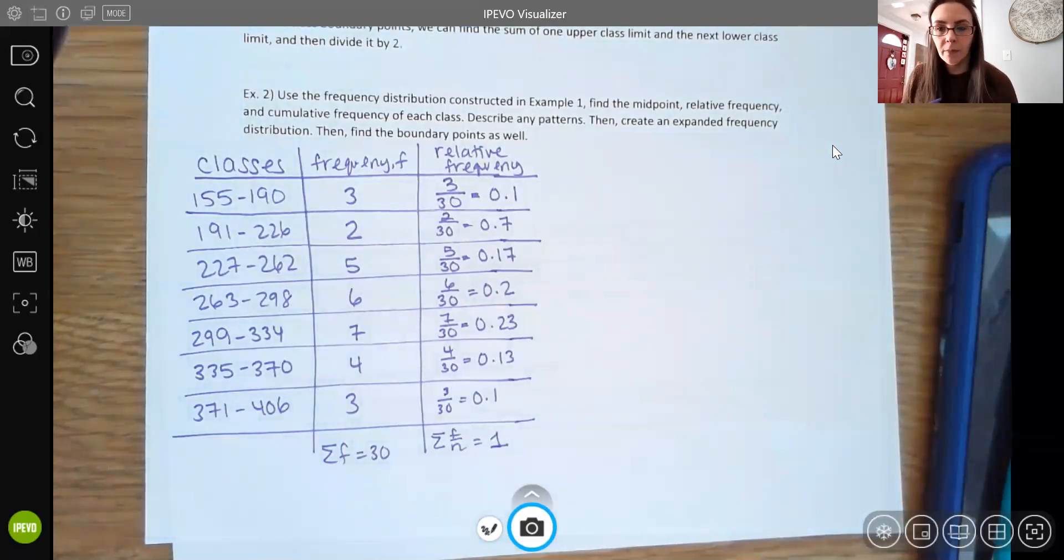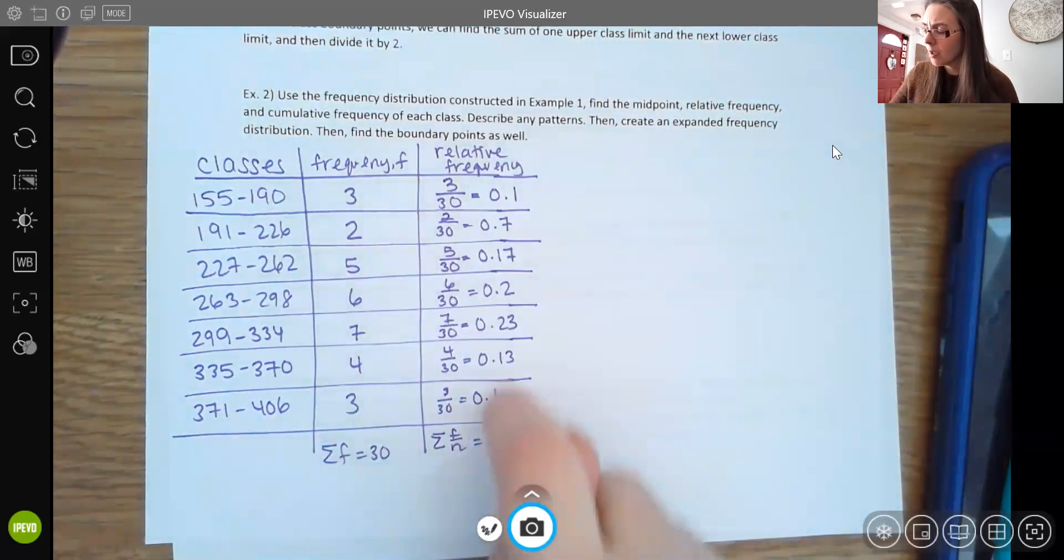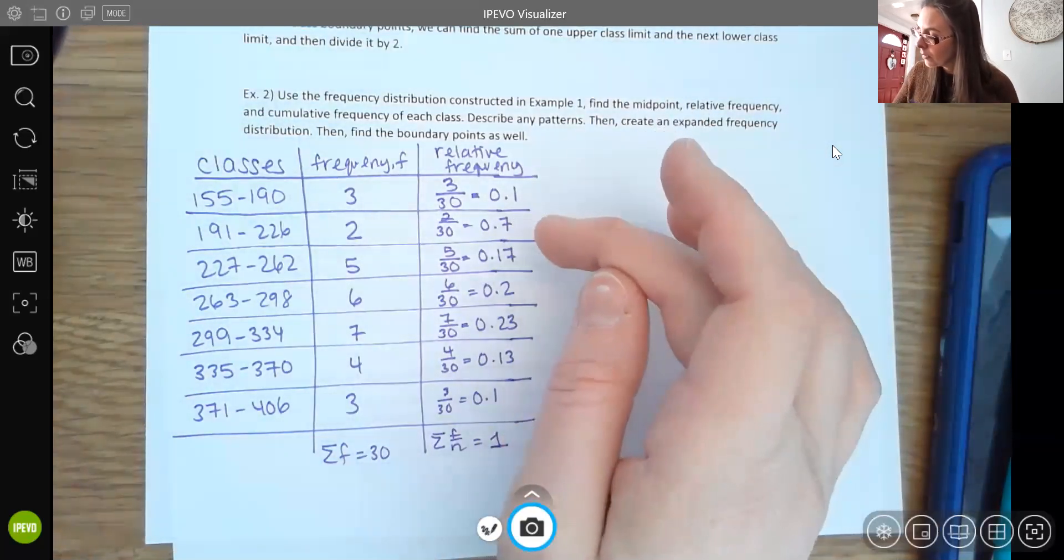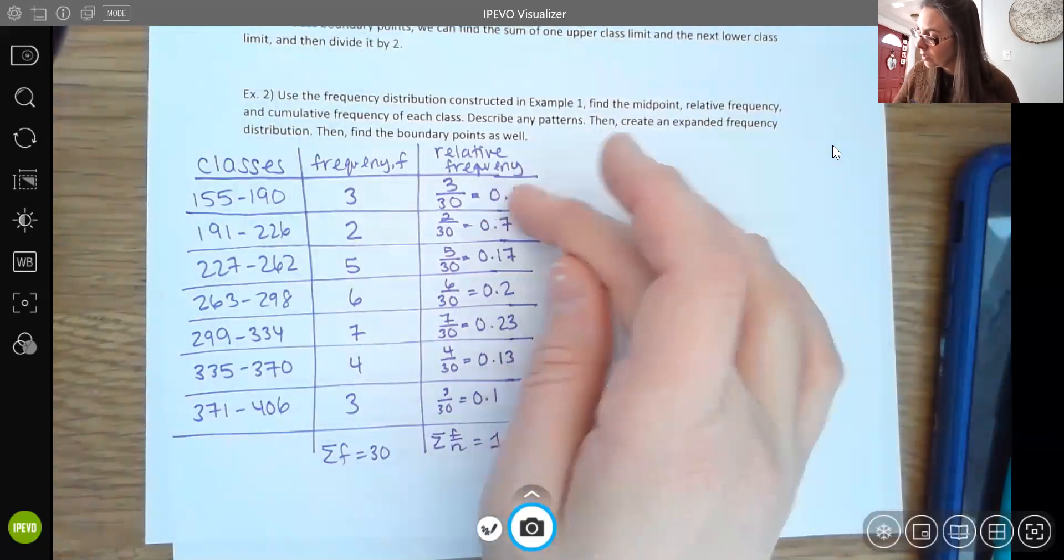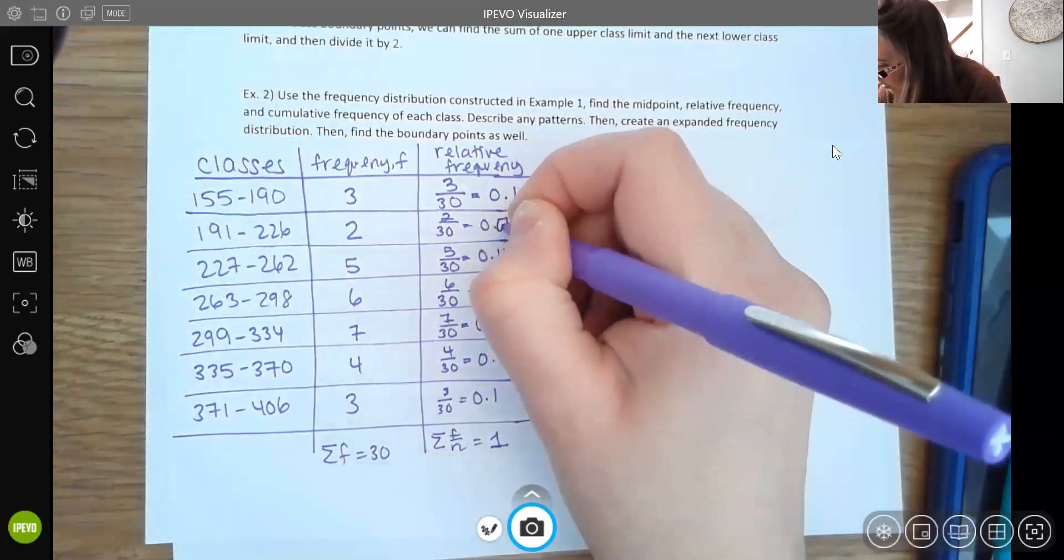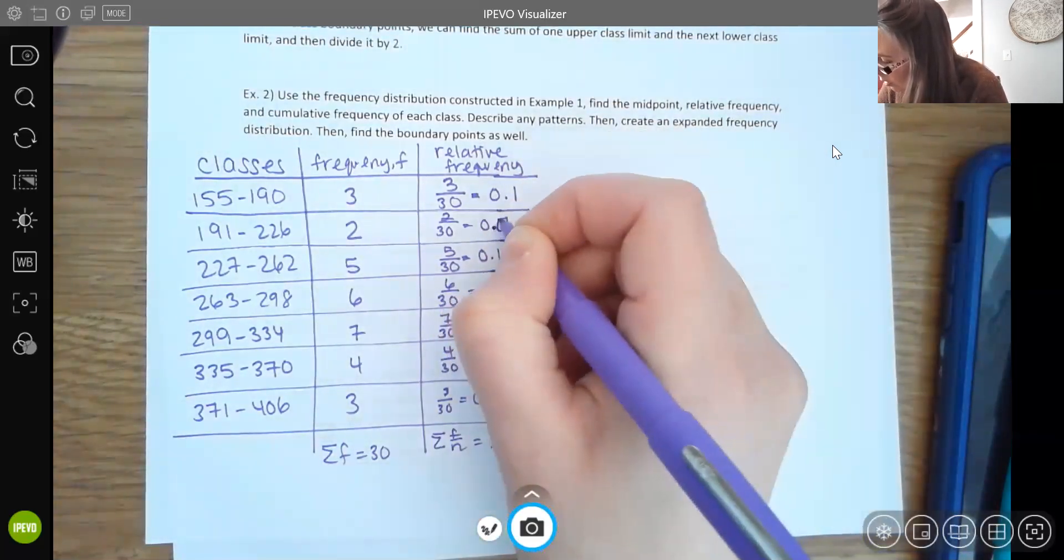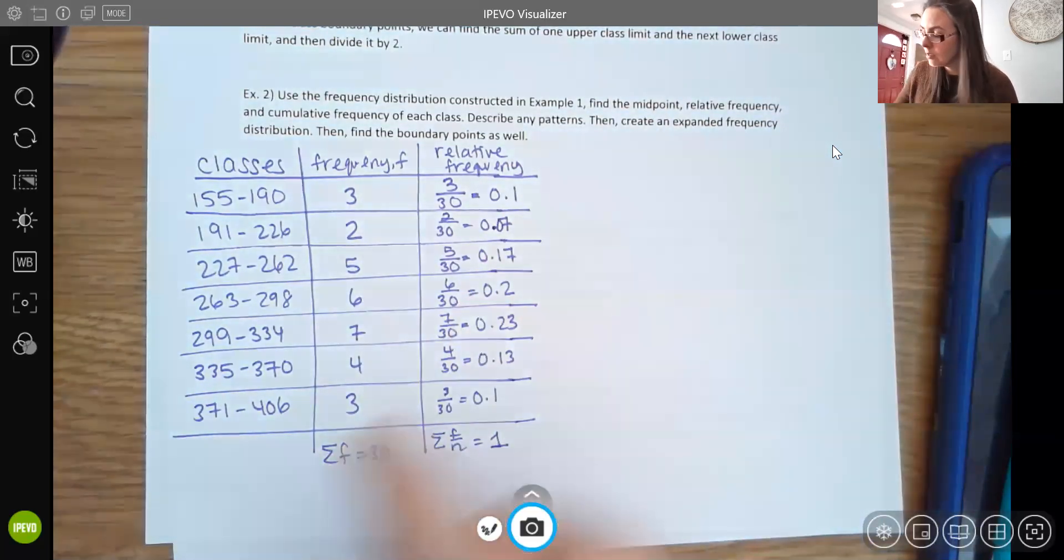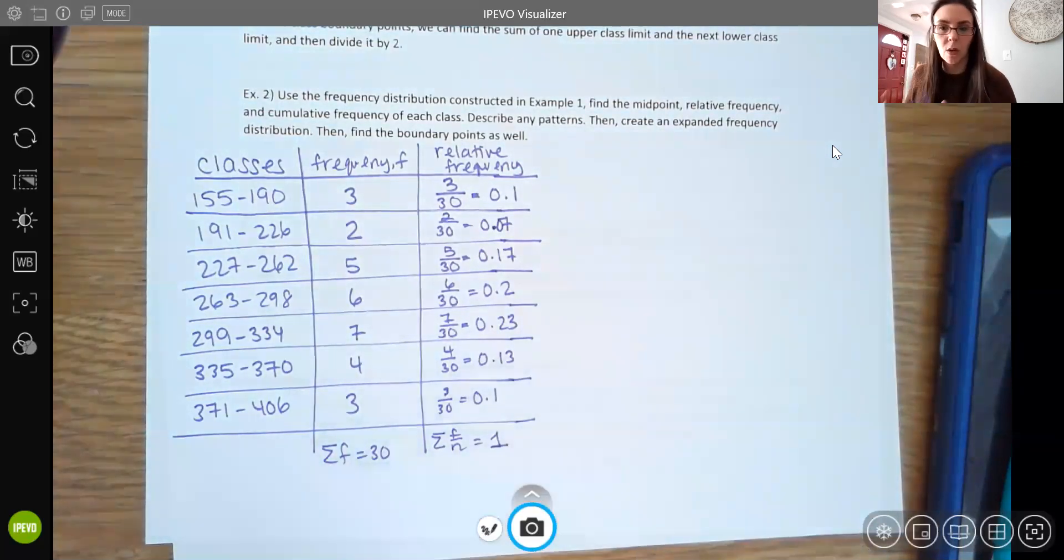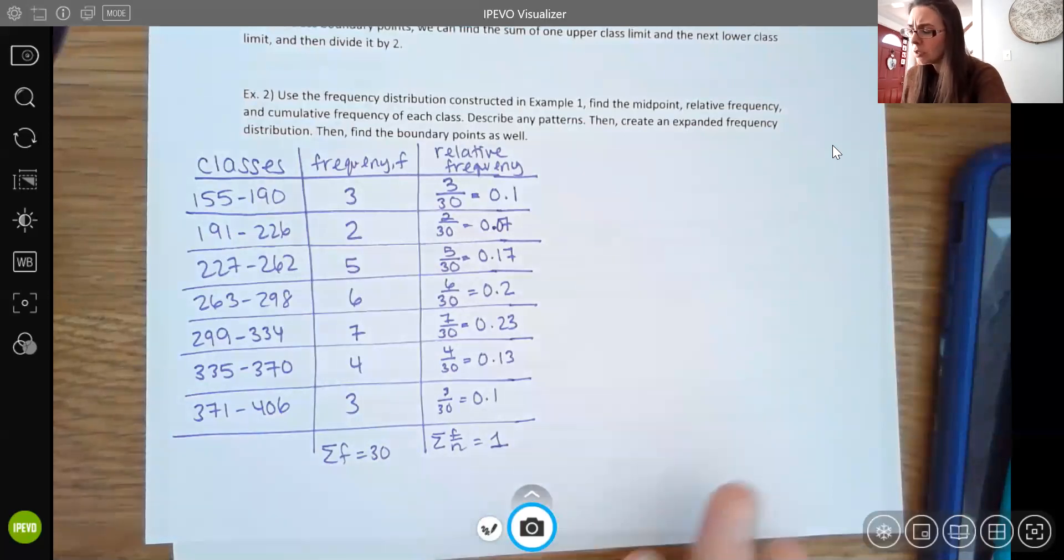So when you add these all up, if you're doing the decimals, you should get a sum of one. Now, if you get like 0.99 or like 1.01, something really close to one, then you're probably okay. You may just have a little bit of a rounding error. But you really should be right at one. If you're using the percent form, then you're just taking these numbers and multiplying it by 100 to get the percent. So that would give you 10%, 7%, 17%, 20%, 23%, 13%, 10%. And then you should add to 100% at the end. So that's your relative frequency.